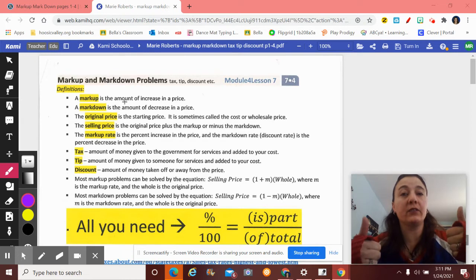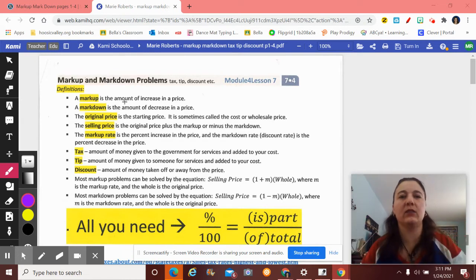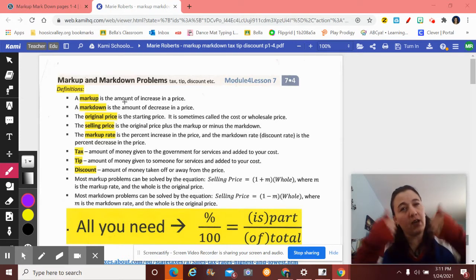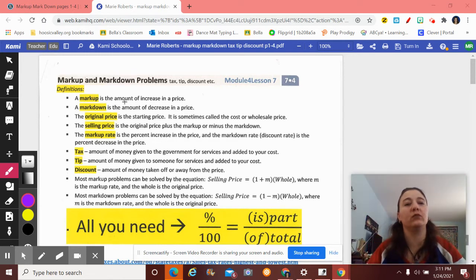Marking something up is an increase in the price. And we always like a markdown when they decrease the price. Truth be told, I think a lot of places or businesses, for example in some furniture stores, they will mark the price up and then they will mark it down to make it look like they're giving you a discount.